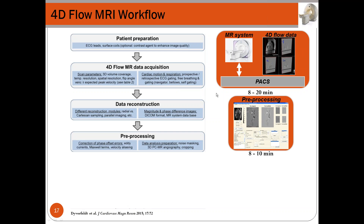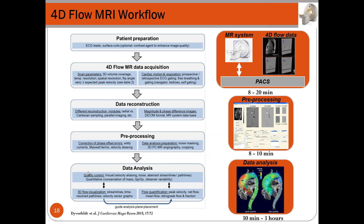After acquisition, we pre-process the 4D flow MRI data with several corrections: eddy currents, Maxwell terms, and velocity aliasing. We also prepare data for visualization and quantification — masking noise, calculating 3D phase-contrast angiograms, and cropping to the specific region of interest. For data analysis, we perform quality control, typically done visually by identifying regions of velocity aliasing, noise, or irregular streamlines. Quantification of different parameters must respect conservation of mass and be logically consistent.